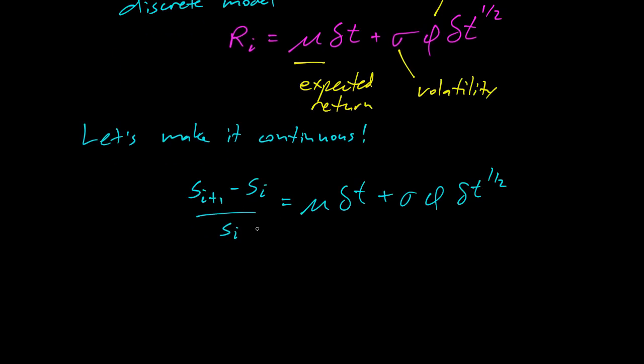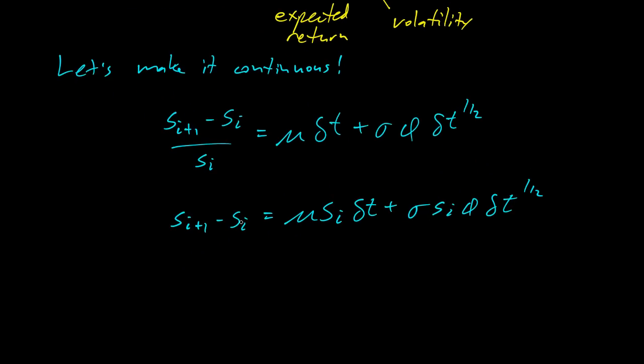Then we can multiply through by s i. And so we get s i plus 1 minus s i equals mu s i delta t plus sigma s i phi delta t to the 1 half. And now thinking in limit continuous going to continuous, this is like d s. This is like dt.